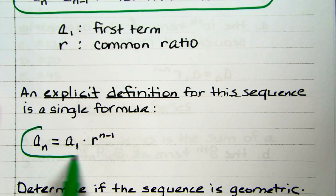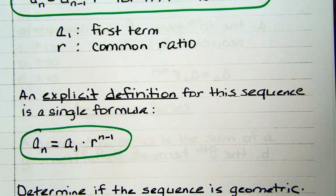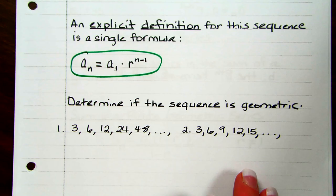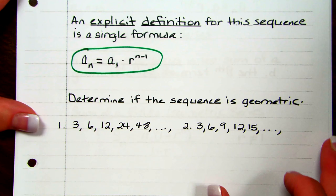With the explicit formula, we don't need the previous term to find the next term. A lot of times your common ratio is going to be a fraction, so keep that in mind. I'll show you how to find the common ratio — it's not going to be as simple as seeing that you add 2, add 2, add 2. It's not going to be like the arithmetic sequence.